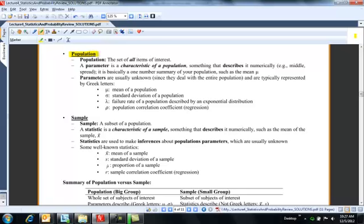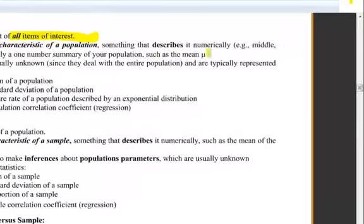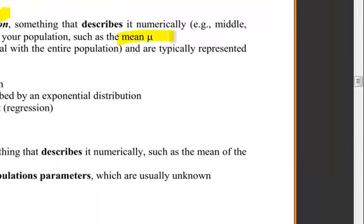A population is a set of all items of interest, so the whole, let's say, entire Rose-Hulman population. A parameter is a numerical summary, some number that describes that population. So it could be the mean, it could be the standard deviation, it could be proportion of people that feel a certain way, but it's one number that describes that population. It's called a parameter.